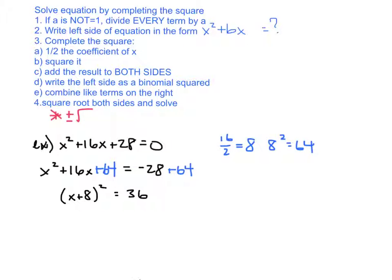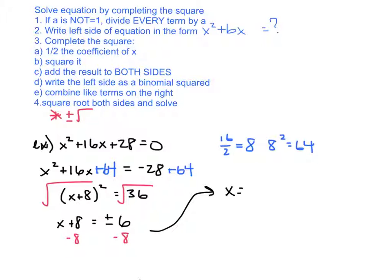Now I can take the square root of both sides, since all the x's are inside a squared binomial. Taking the square root gives x plus 8 equals plus or minus 6. To solve for x, subtract 8 from both sides: x equals negative 8 plus 6, and x equals negative 8 minus 6. Negative 8 plus 6 is negative 2, and negative 8 minus 6 is negative 14.